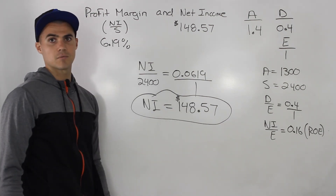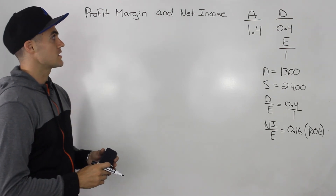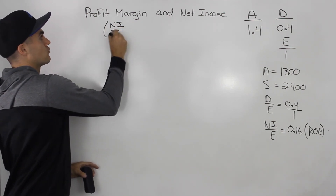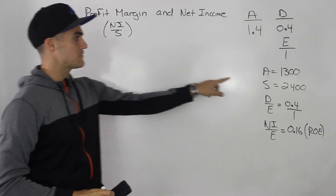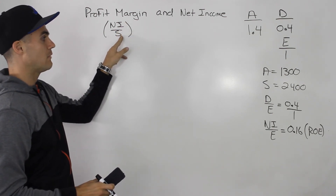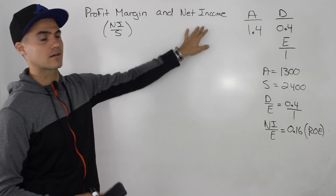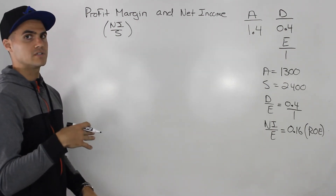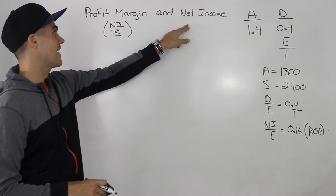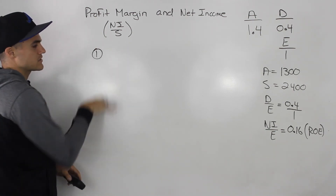Here is how I would personally approach solving this question — the second method. I'm finding the profit margin and the net income. Since profit margin equals net income over sales, and I already have the sales amount, if I find the net income first I can just divide by sales to get the profit margin. So in this method I'm going to find the net income first, then find the profit margin.